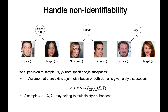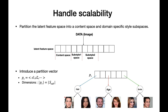The first challenge to the decomposition is the issue of non-identifiability. Since the domains are not paired, there is no way to ground generated images onto a particular subspace. To solve this problem, we assume that the pair of images are independent given a common subspace. This requires the knowledge of image attributes at training time, but it makes the domain translation identifiable.